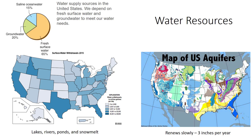Groundwater is stored in underground formations called aquifers. There is far more groundwater than surface water. Experts estimate that some 8,000 trillion to 10,000 trillion gallons of water are contained in mainland United States aquifers. However, this water renews very slowly, averaging about 3 inches per year. According to the USDA, about 25% of the nation's groundwater supplies are being mined — withdrawn more rapidly than renewed — mostly in the southern plains and the southwest, where the water loss in an average year is 15 billion gallons per day.